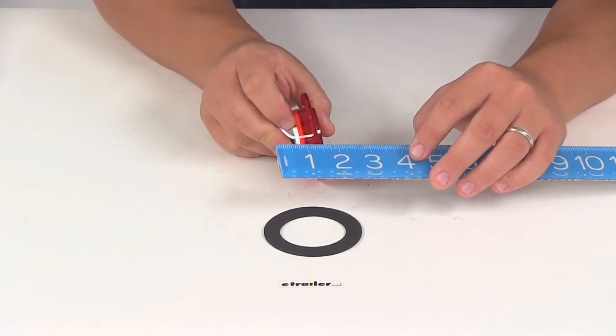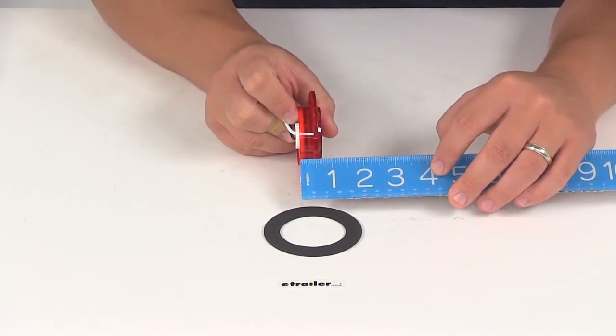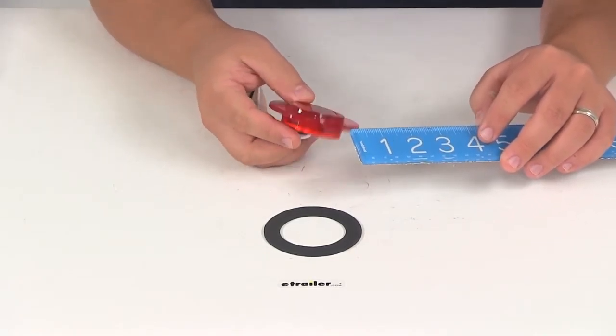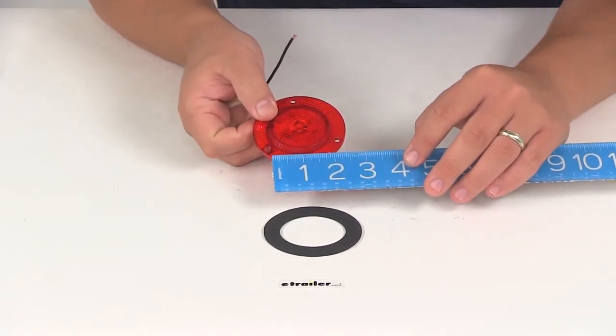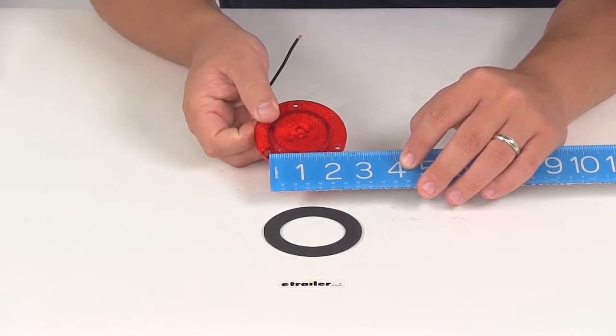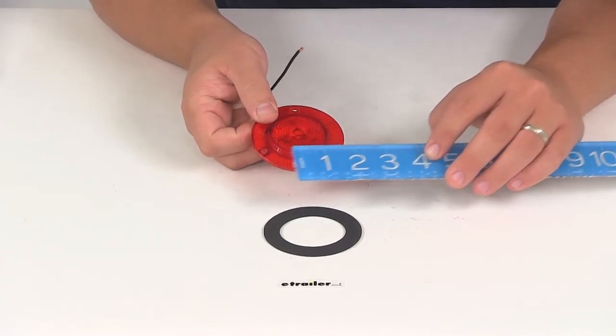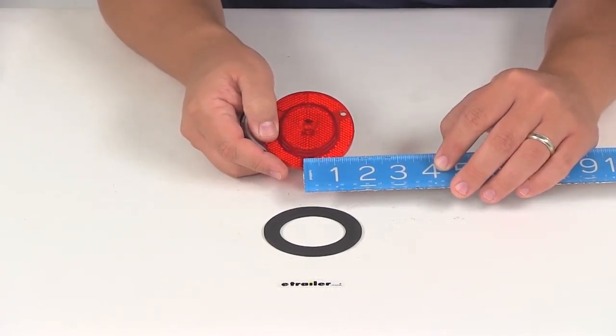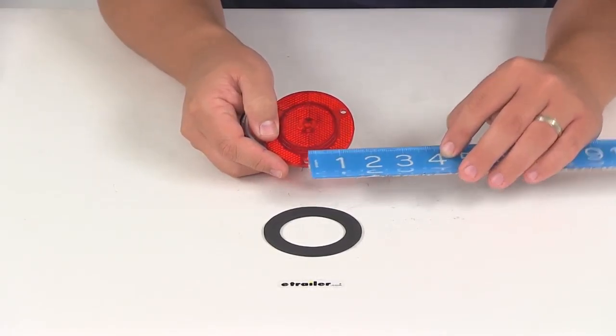Measuring the entire depth from back to front, we get about three-quarters of an inch. The mounting holes are separated on center by two and one-quarter inches—that's the same distance between each mounting hole. The diameter of each mounting hole is about three-sixteenths of an inch.